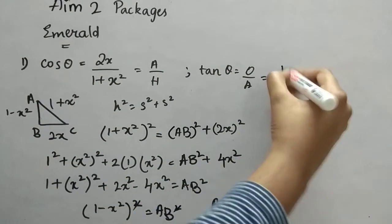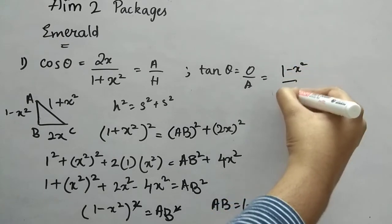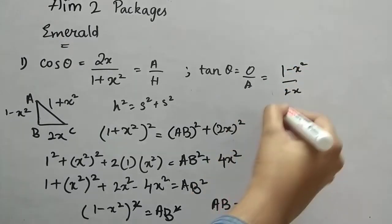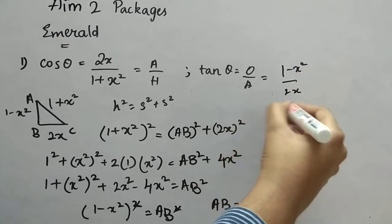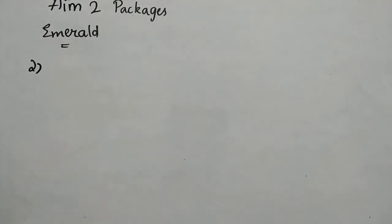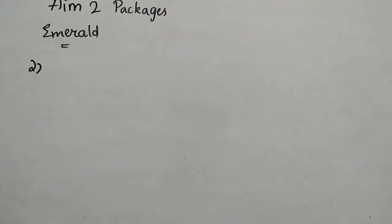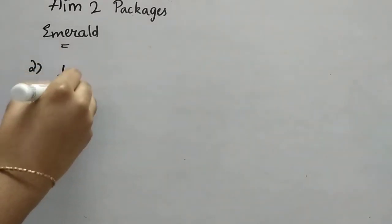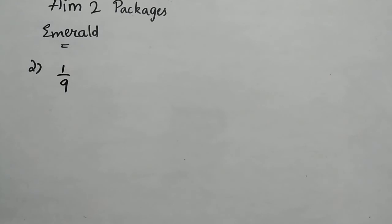Opposite is (1 − x²) and adjacent is 2x, so tan θ = (1 − x²) / 2x. Option B. Now the second question: tan θ is 3 by 4, and we have to find (1 − cos θ) / (1 + cos θ). The answer is 1 by 9, option B.